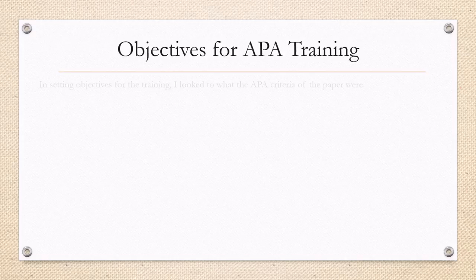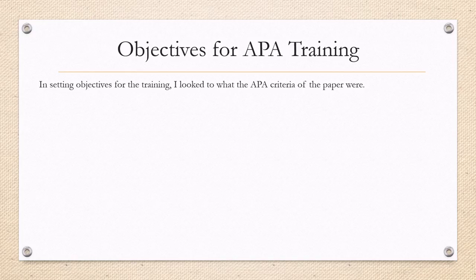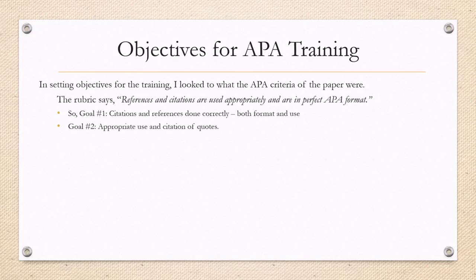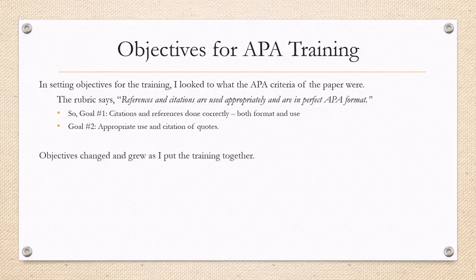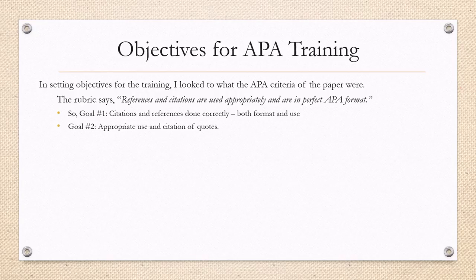In setting objectives for the training, I looked to what the APA criteria of the paper were. The rubric says references and citations are used appropriately and are in perfect APA format. So goal number one: citations and references are done correctly, both in terms of their format and use. Goal number two: appropriate use and citation of quotes.